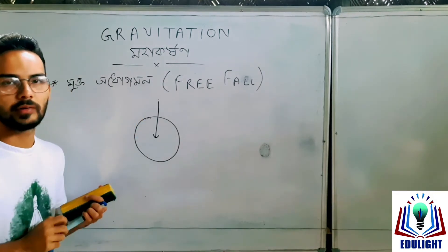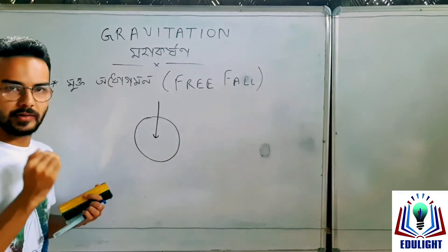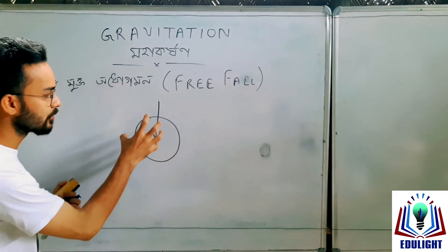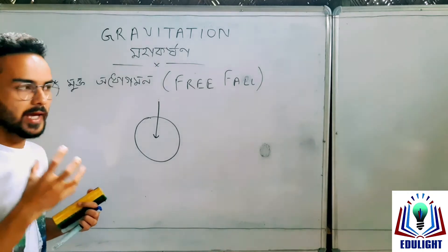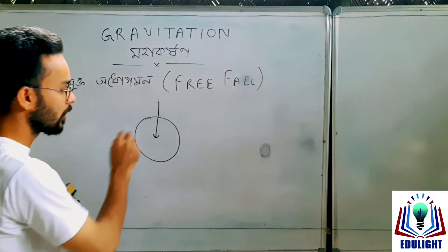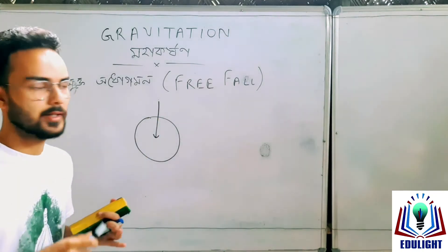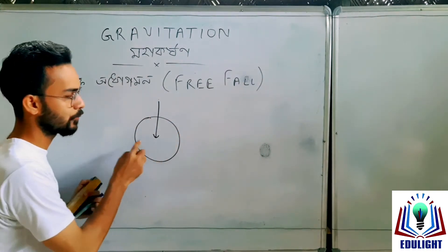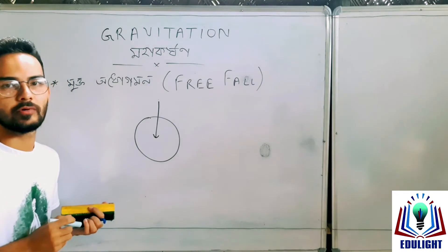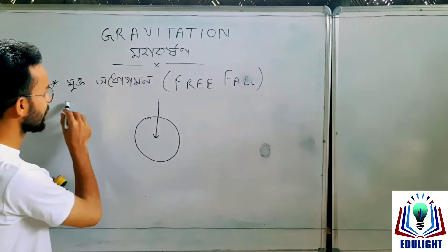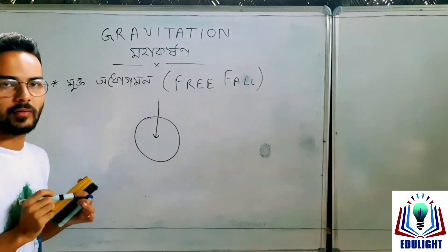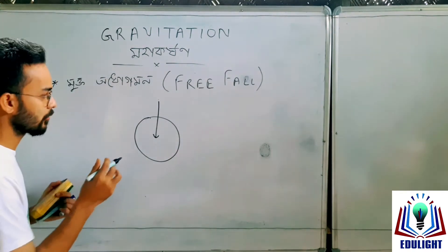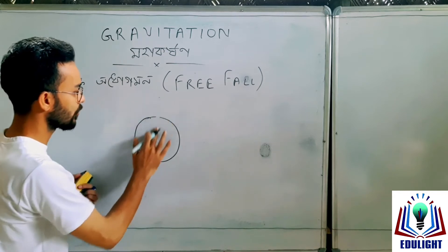The effect due to gravitational force of Earth — our object can fall to the ground freely. It requires the effect due to the fabric of this object. At this point, you have a very important concept.